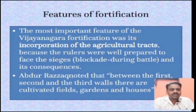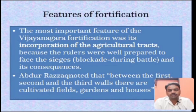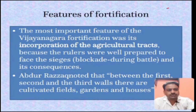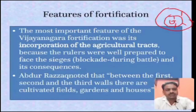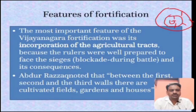Abdul Razak quoted that between the first, second and third wall there were cultivated fields, gardens, as well as houses. Among these three walls there used to be agricultural land. As I can draw here - this is the first wall, this is the second wall, and then the third wall - and in the areas between them there used to be agriculture, so that ample crops could be grown and utilized by the people at the time of sieges.